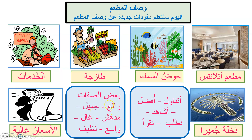You can use these verbs and adjectives to describe any restaurant you know - Matam Atlants, Matam Biryani, Matam Pizza, KFC, Pizza Hut - anything. You can describe any restaurant. شكراً صف سيدس، مع السلامة.